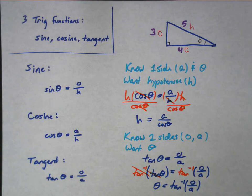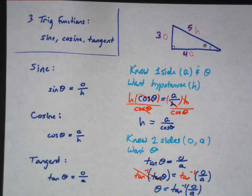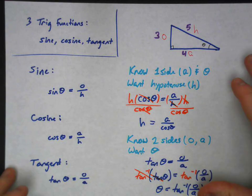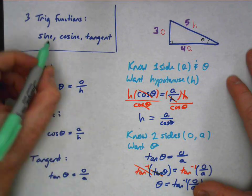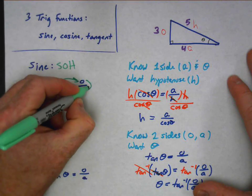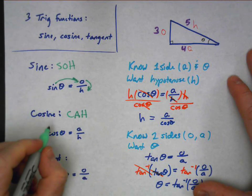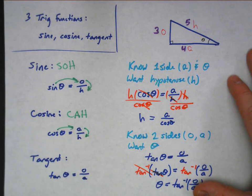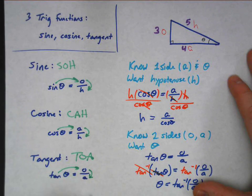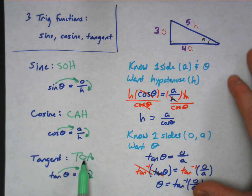So why the title SOH CAH TOA? Because you want to remember these things fairly quickly and get fast at this. SOH stands for sine — sine is opposite over hypotenuse. CAH is cosine — cosine is adjacent over hypotenuse. And TOA is tangent — tangent equals opposite over adjacent.